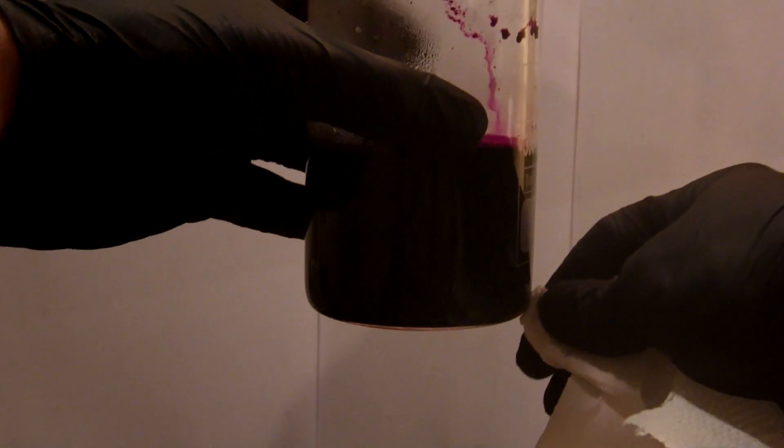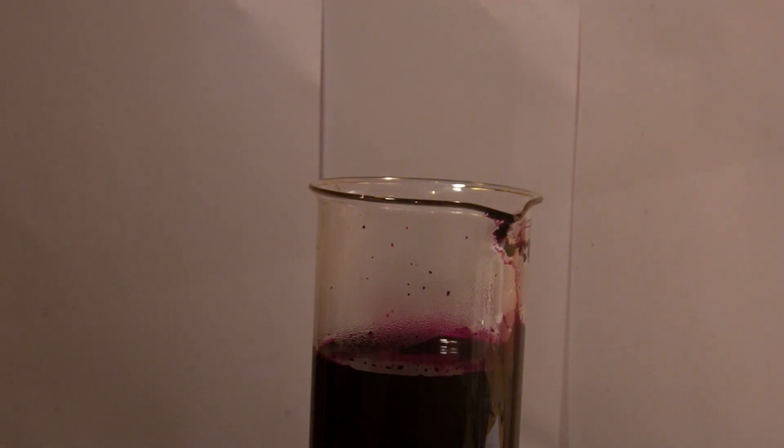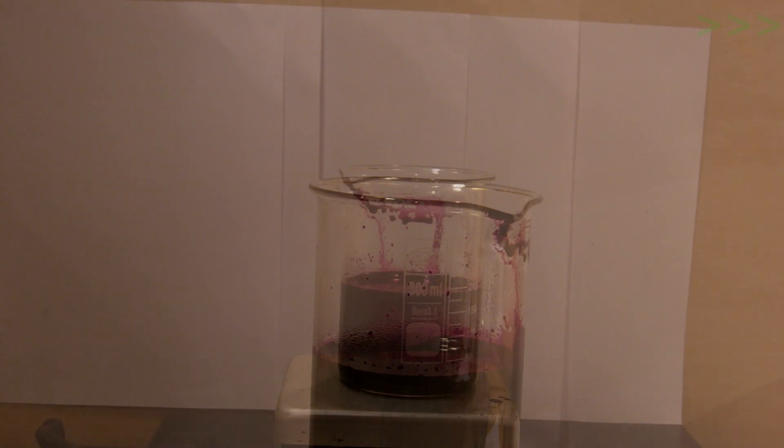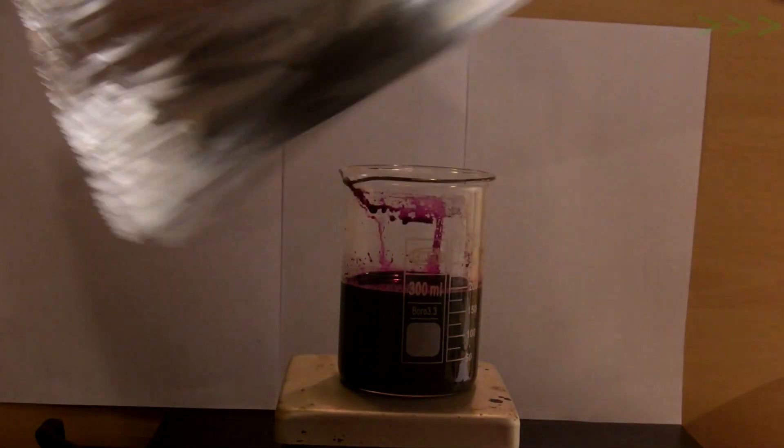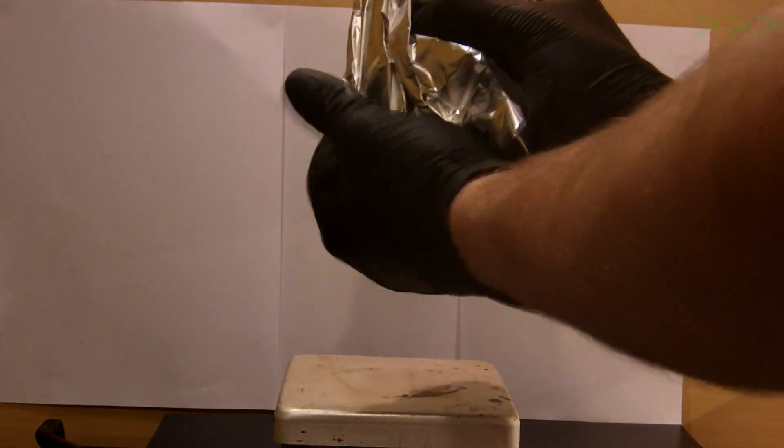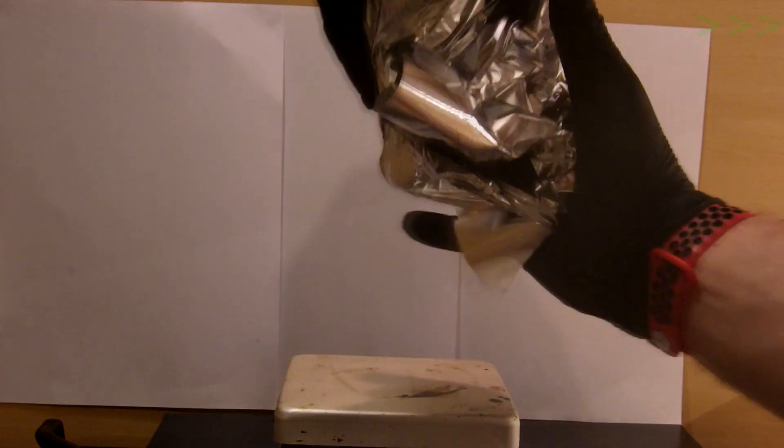Stop and remove stir bar. I then wrapped the beaker in foil, hoping to get larger crystals, but it did not really work this time. I got about the same size crystals when directly putting beaker in freezer.